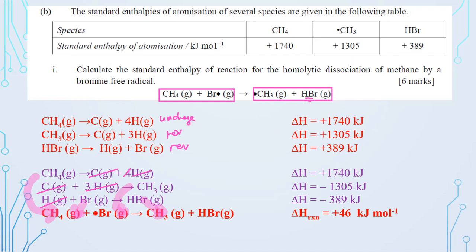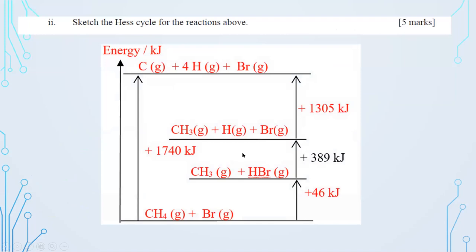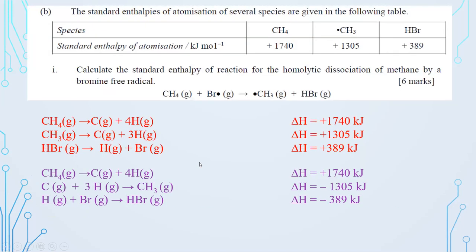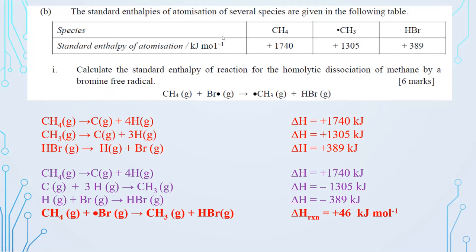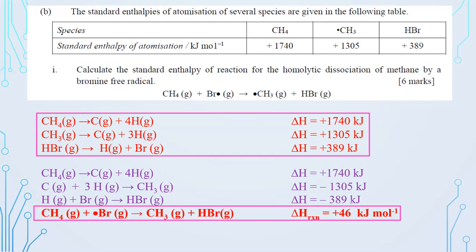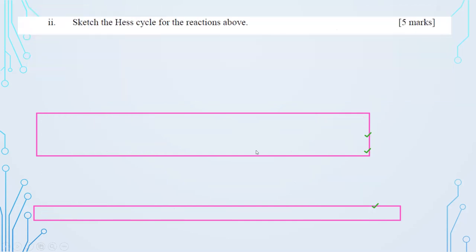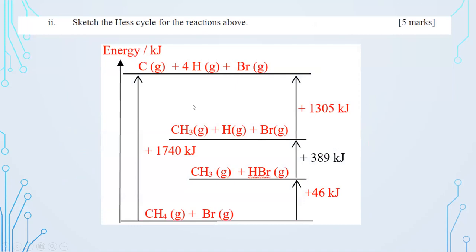For part B2, construct the energy cycle. Note that four equations are used with values 1740, 1305, 39, and 46 kJ/mol. The latter three (1305, 39, and 46) should be on one side of the cycle such that their sum equals 1740. Arrange the cycle so these three are on the back/return pathway, confirming the Hess's Law cycle is consistent.